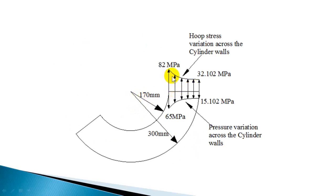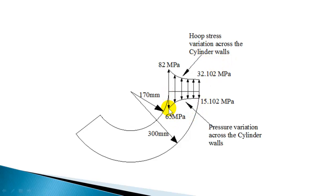Now let us plot the variation of hoop stress and radial pressure. Inside radius is 170 mm, corresponding hoop stress is 82 MPa. On the outer surface the hoop stress is 32.102 MPa. The variation of hoop stress follows a parabolic curve. Inside pressure is 65 MPa and external pressure is 15.102 MPa. You can plot the variation of radial pressure across the cylinder wall, giving the complete distribution of hoop stress and radial pressure across the thickness.